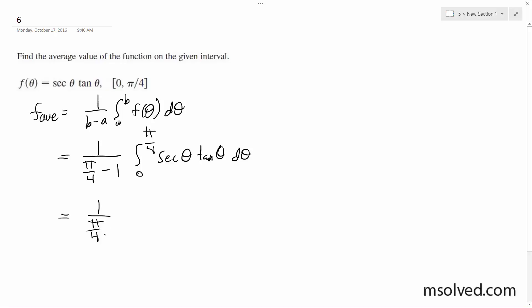It's pi over 4 minus 0, not 1. So secant theta from 0 to pi over 4. This ends up just being 4 over pi times secant of pi over 4 minus secant of 0.